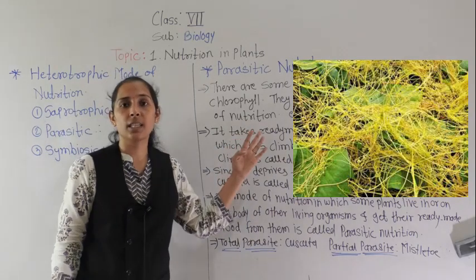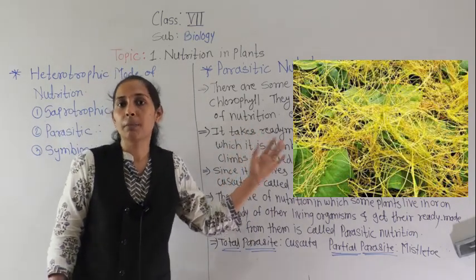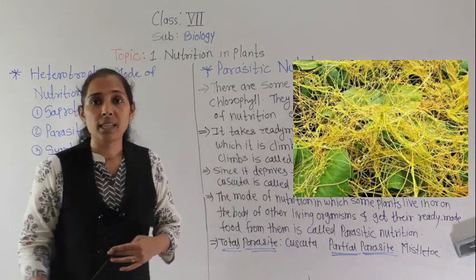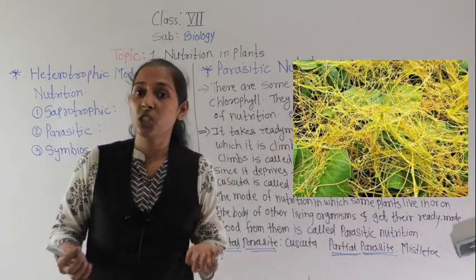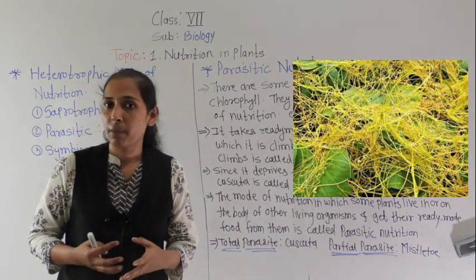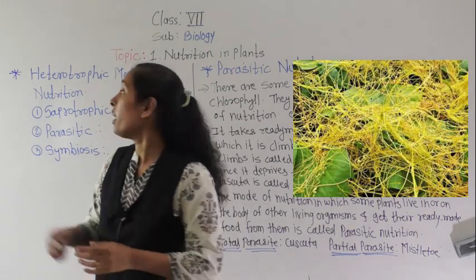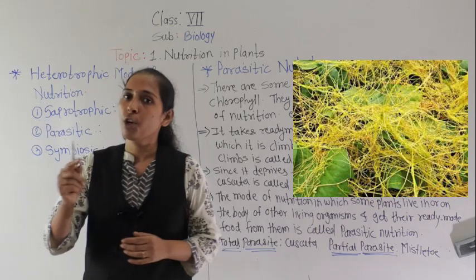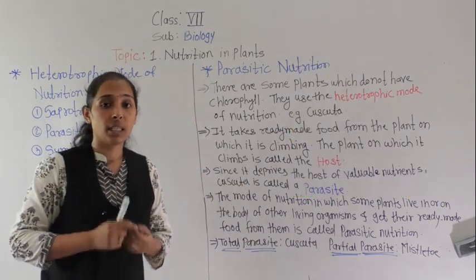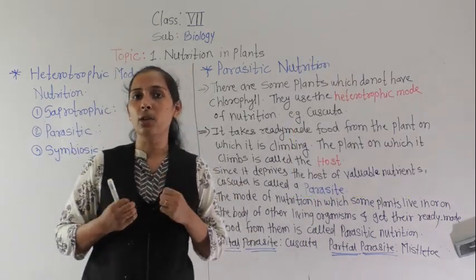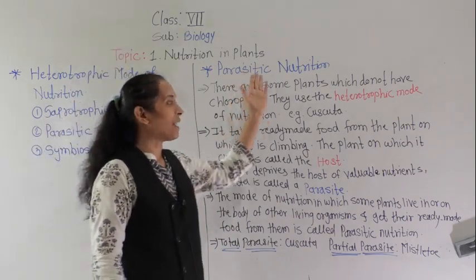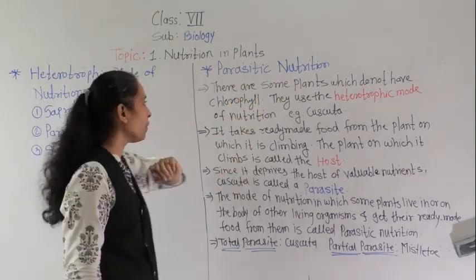Here in the image you can see the cascuta plant, or the amarbel plant. These are non-green plants which are yellow in color. And because it is a non-green plant, that's why it is following the heterotrophic mode of nutrition. So let's see how they fulfill the need for nutrients with the help of parasitic nutrition.